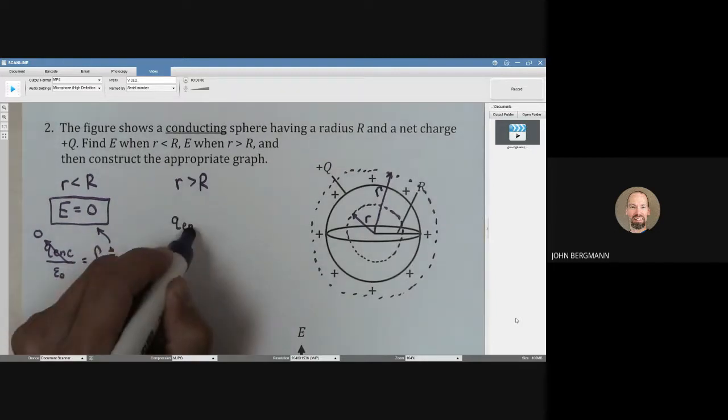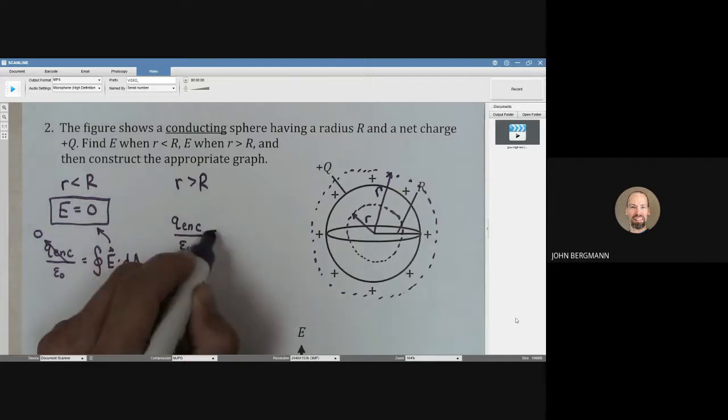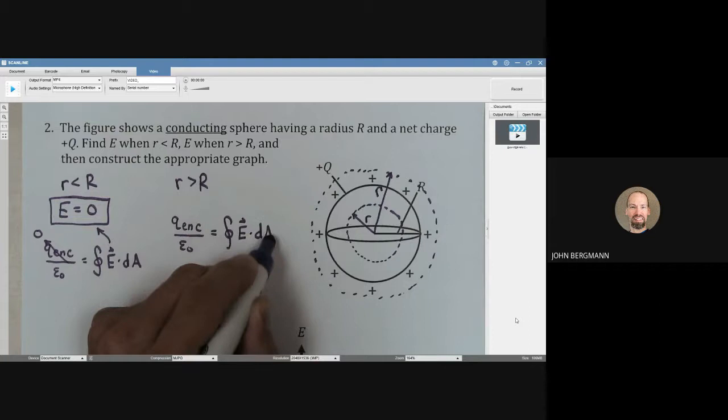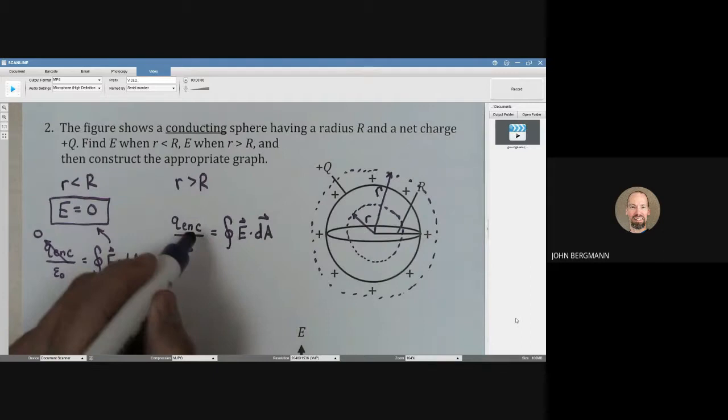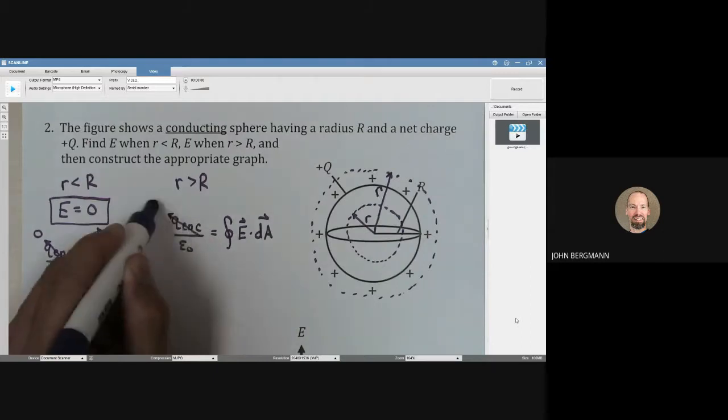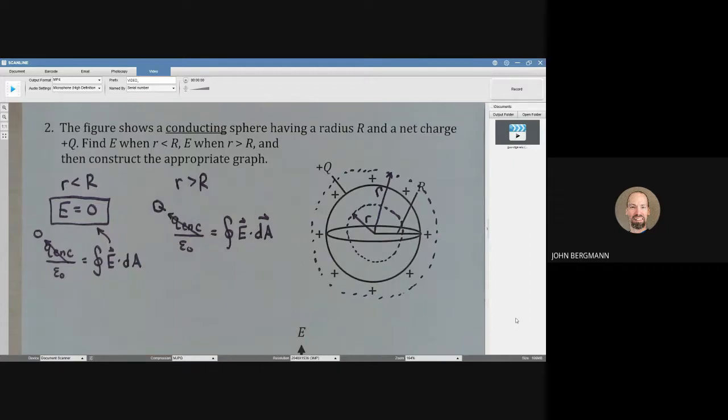q enclosed divided by epsilon naught is equal to the surface integral of E dot dA. What's the charge that's enclosed here? In this picture, you can see the total charge that's enclosed is capital Q. So the numerator on the left side goes to capital Q.